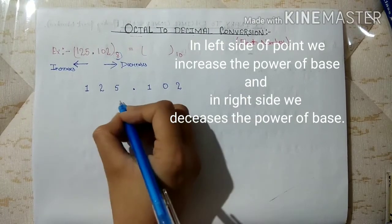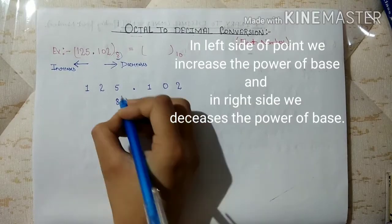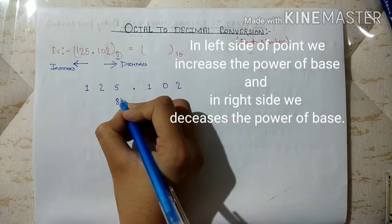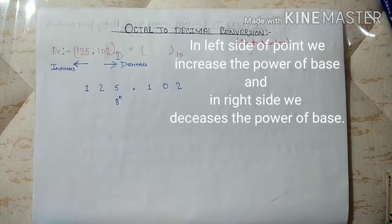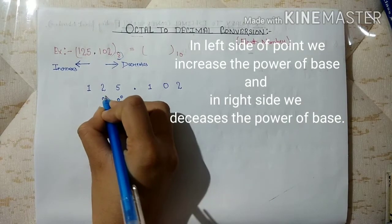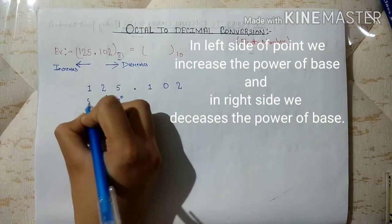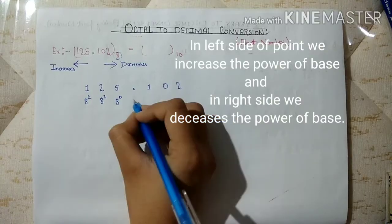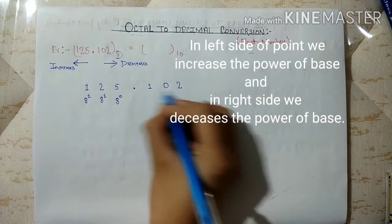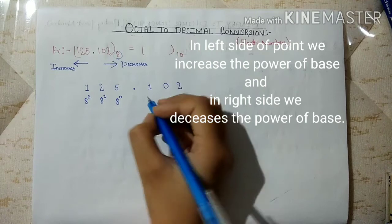In left side we increase the power. So here we start from 0. 8 to the power 0, 8 to the power 1, 8 to the power 2 and here we decrease the power as it is right side of point.